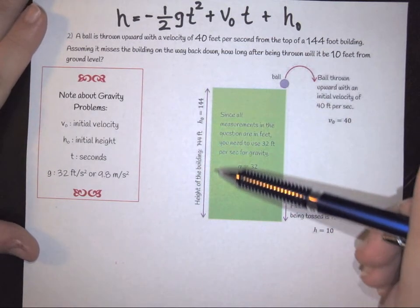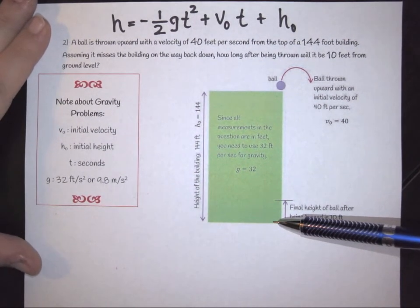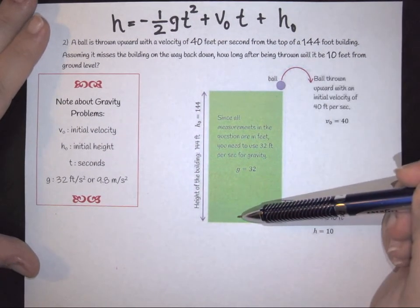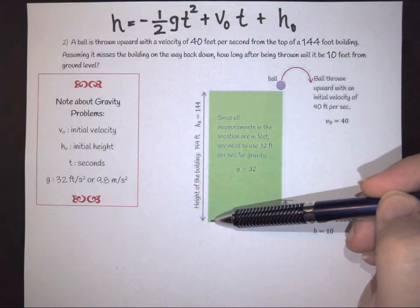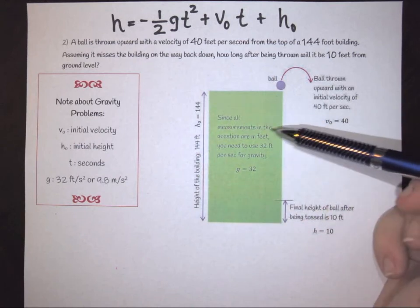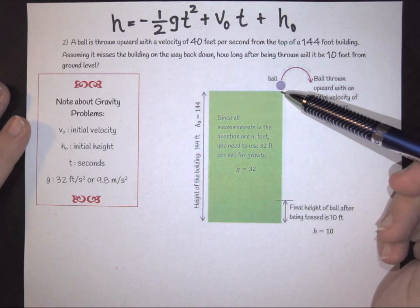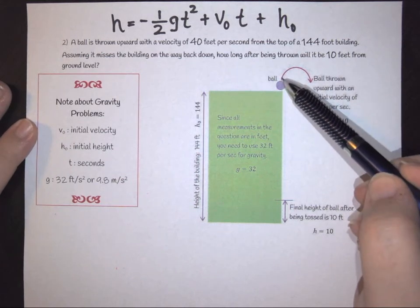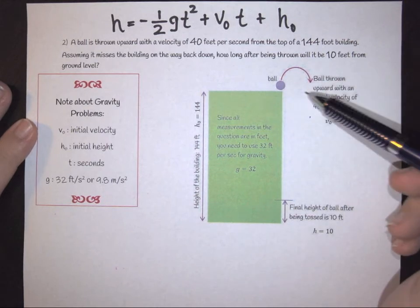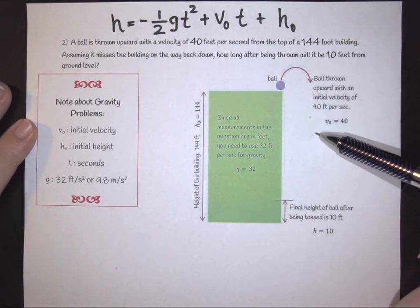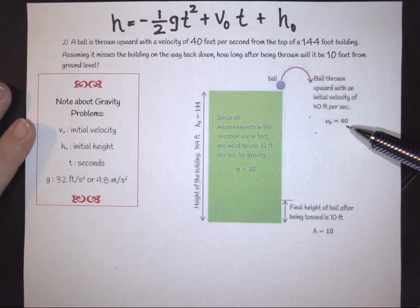So this green square represents your building. And I always recommend drawing a picture. So when we're talking about the height of your building, that's this height here. So we're telling you that this initial height, if you're standing on top of it, would be the height of the building. So that's going to be that 144 feet. What we're doing is we're tossing this ball up, and so it's going to go up until gravity pulls it back down. And so that initial velocity has to do with the speed of which it's being tossed. Since we were told it was 40 feet per second, that's your V-knot number.